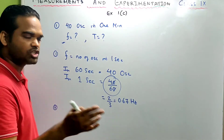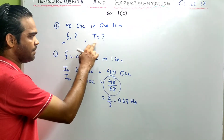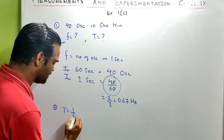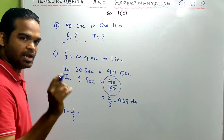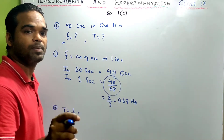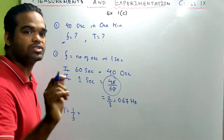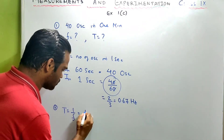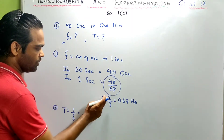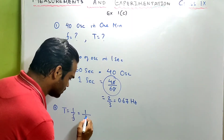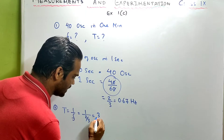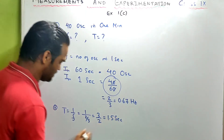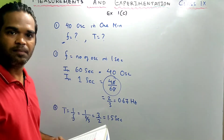The next part: time period. We have a relationship between time period and frequency. Time period is 1 by frequency — the time required to complete one oscillation. Time period is 1 by frequency, so that's 1 by (2/3) = 3 by 2, which is 1.5 seconds. So that's your time period.